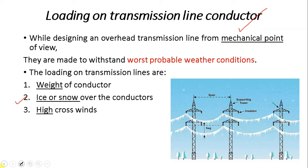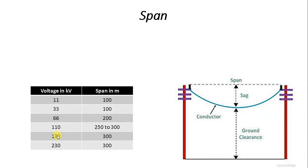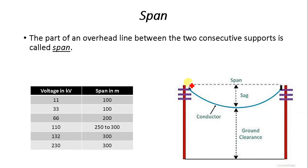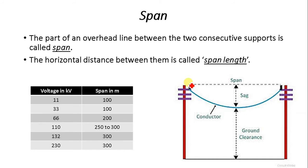Now let us define what is sag, what is span, and what is clearance, because all these terms are correlated. So first, what is span? Here you can see two towers connected with the help of a conductor. Span is nothing but the part of an overhead line between two consecutive supports. We can also say that the horizontal distance between them is called the span length. So if this is tower A and this is tower B, the horizontal distance between pole A and pole B is called the span.